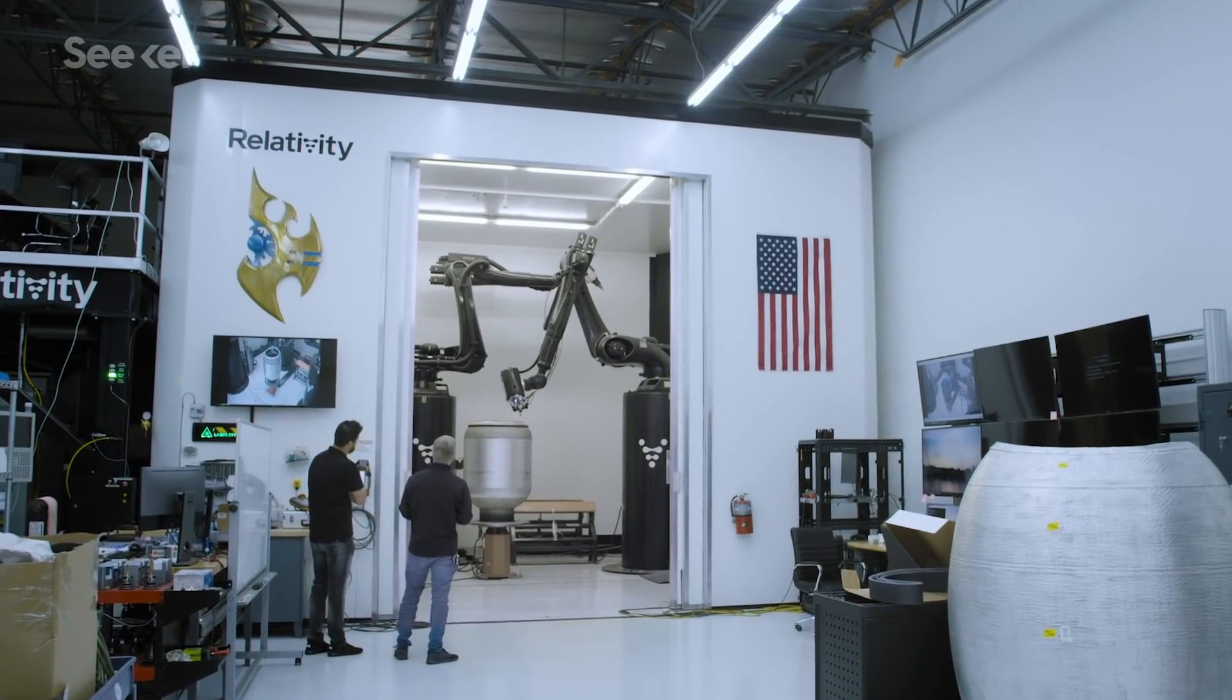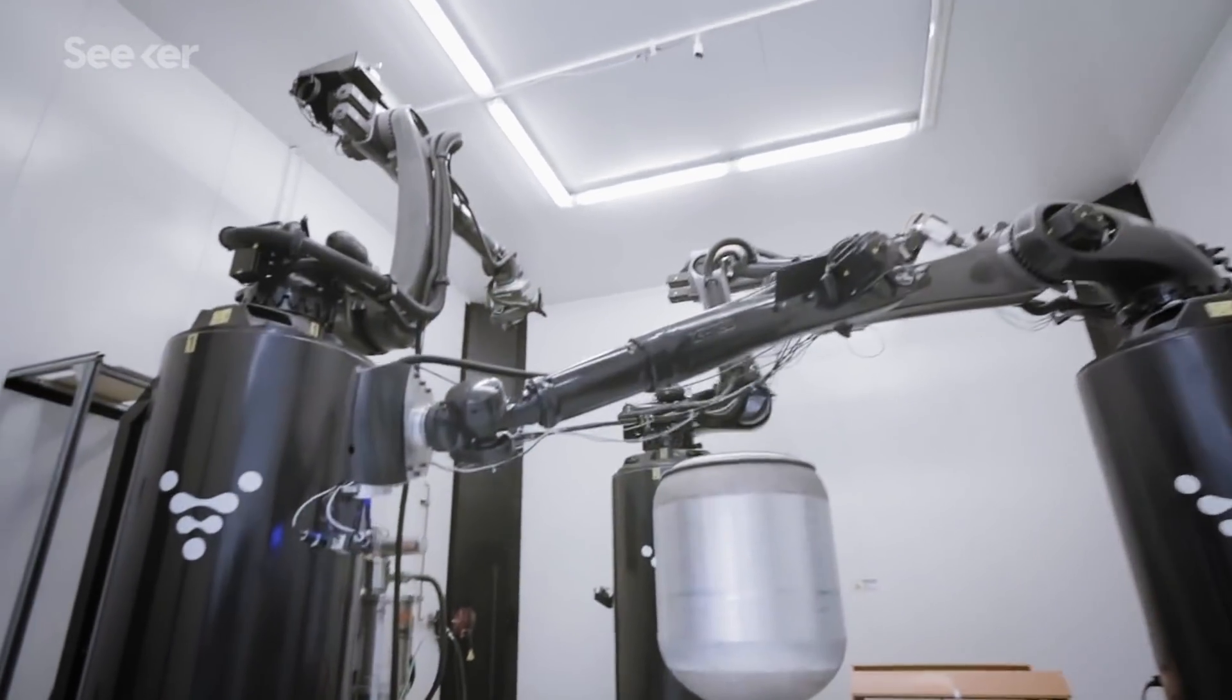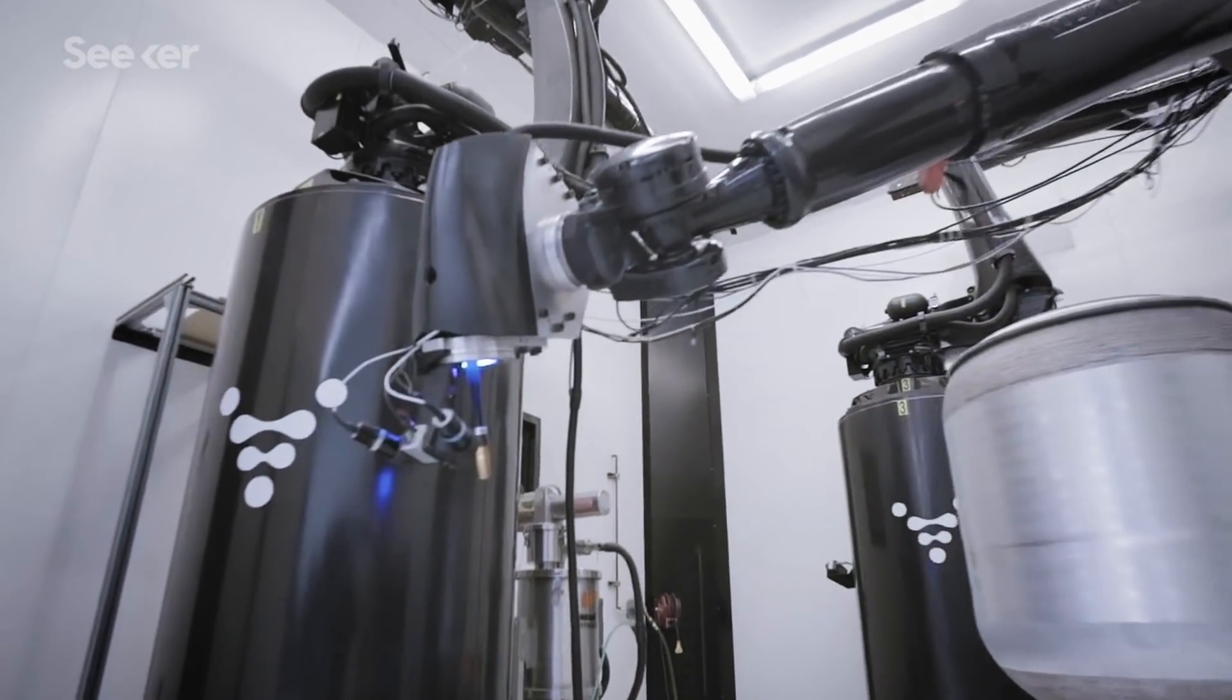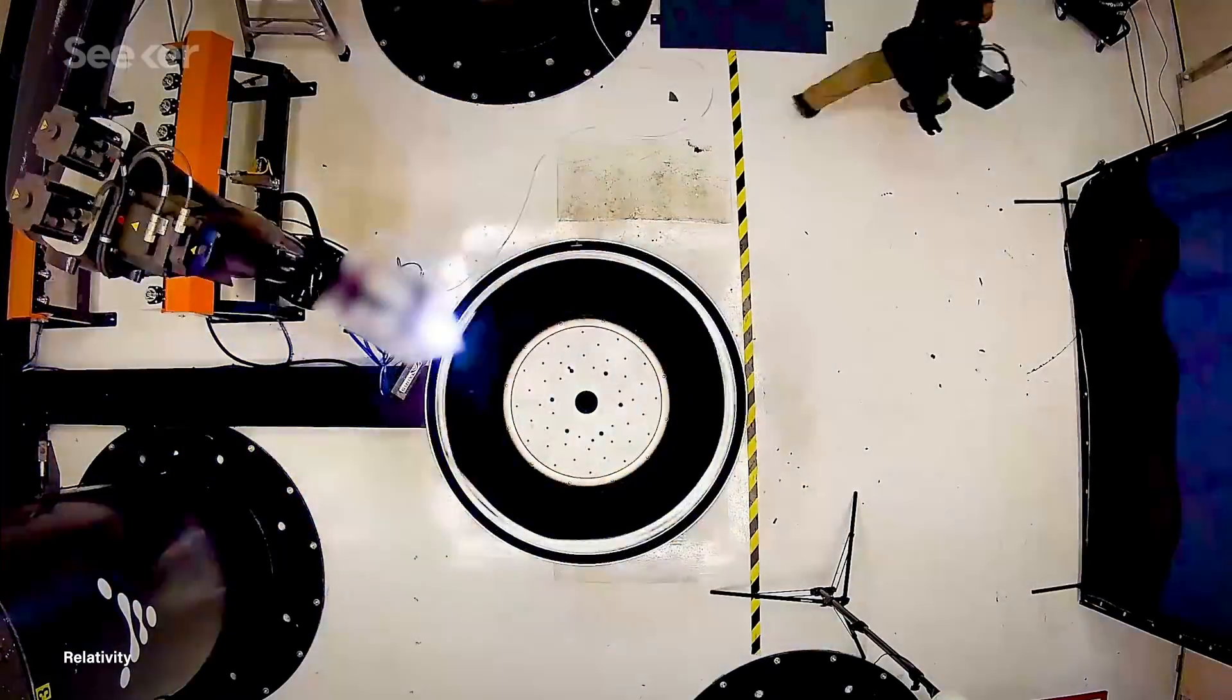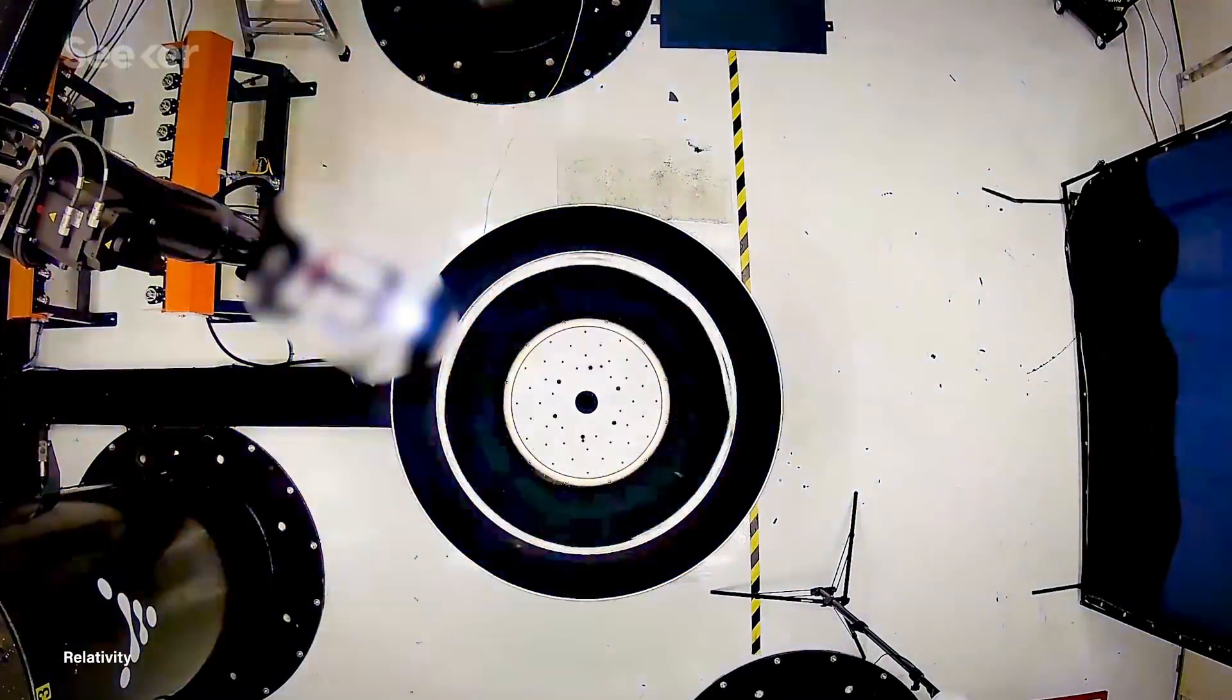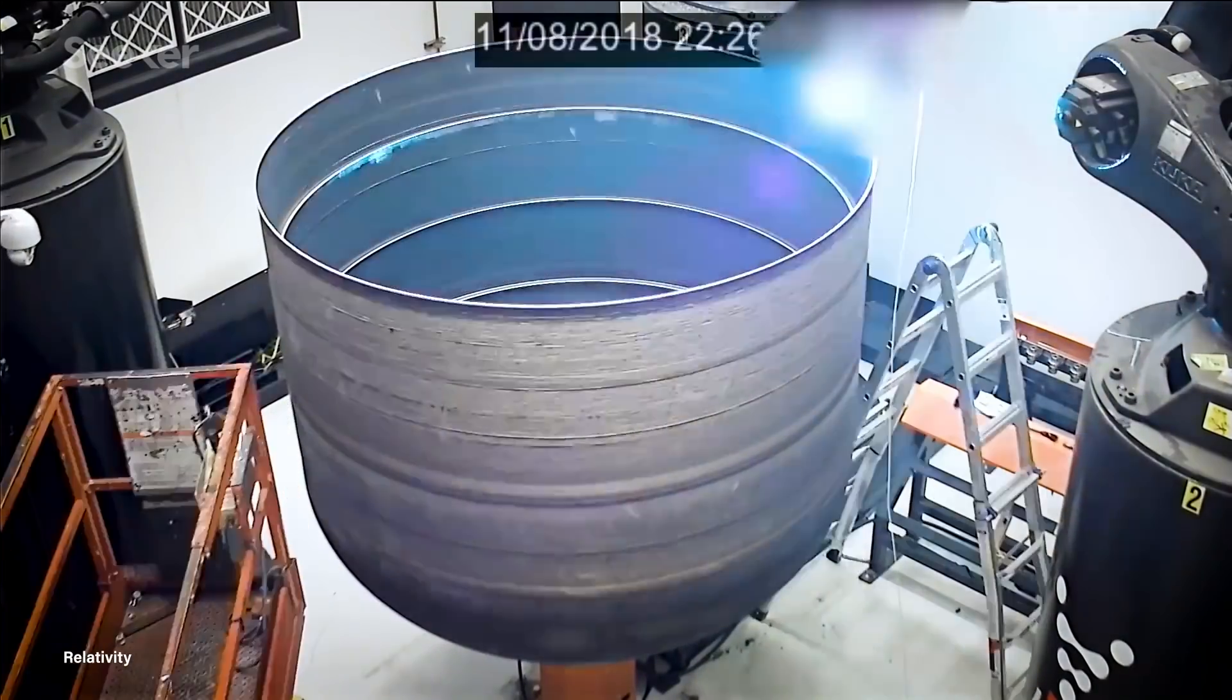This is a six-degree freedom industrial robot arm so it can move anywhere within about a 14-foot radius of its center. Right now the biggest parts we can make are nine foot diameter and about 15 feet tall, and our printers are only getting bigger over time.